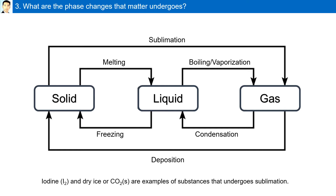Iodine and dry ice, or solid carbon dioxide, are examples of substances that undergo sublimation.